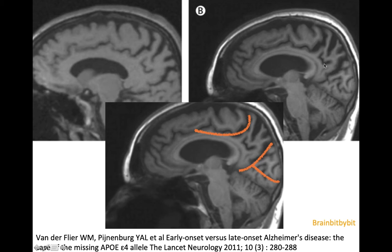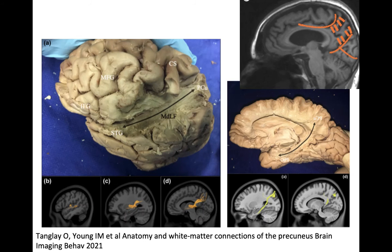The precuneus is not only involved in visuospatial processing, but also in episodic memories — memories about your own life. It has many connections with the frontal lobe, and also connections with the superior temporal gyrus, as seen on these macroscopic specimens, and with the parahippocampal gyrus, both on the macroscopic specimens and on tractography.